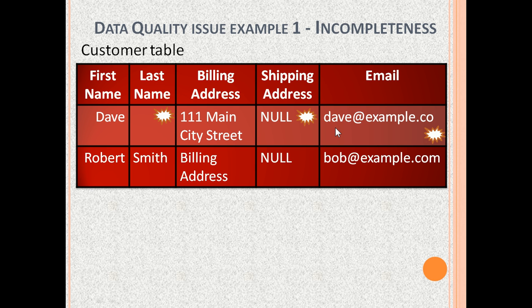Here, last name is missing, shipping address is missing, and the email is truncated. Robert has the default billing address and his shipping address is missing. It is also possible that the customer table misses records that exist in the source data, or the customer table is not updated.